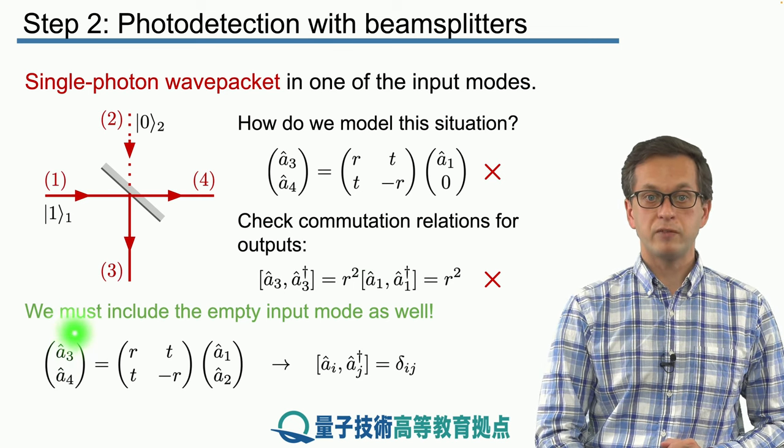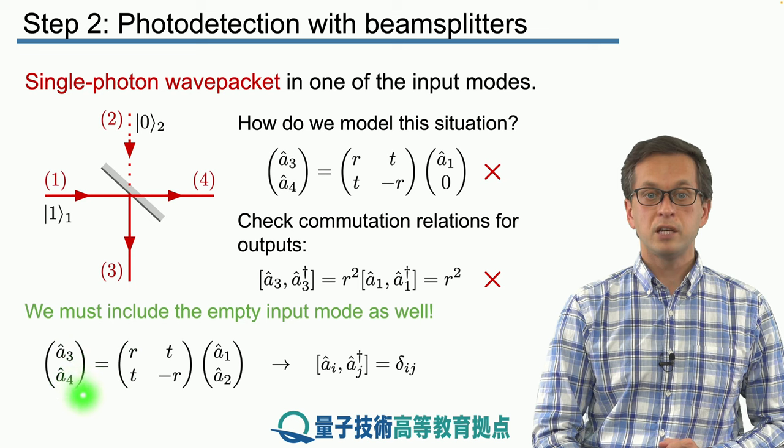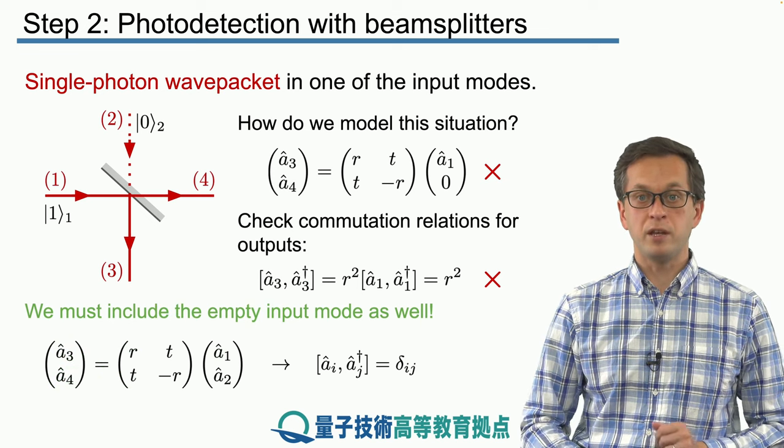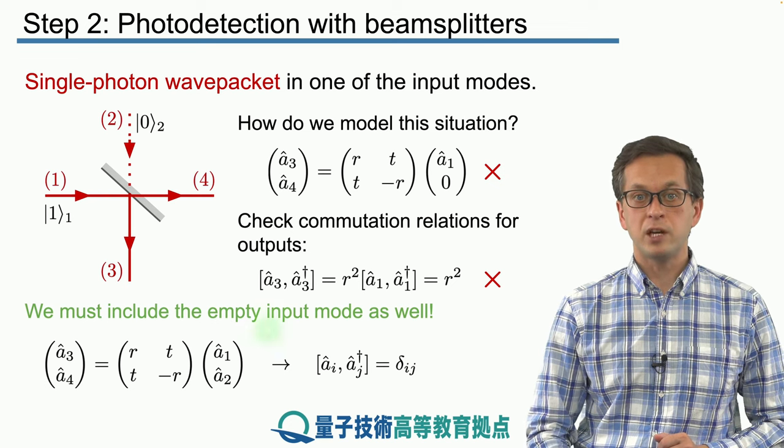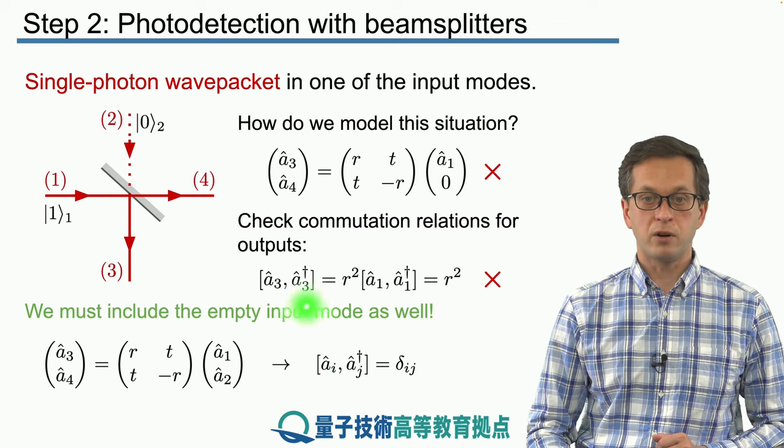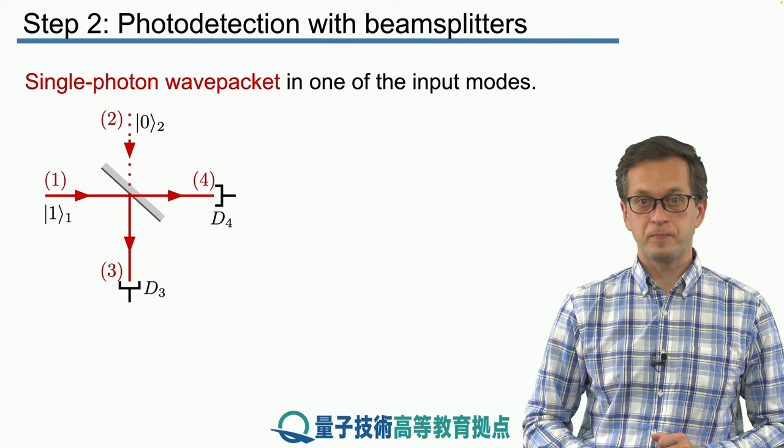So the correct form is the following. It's written over here where we have the vector of A3 and A4 times our beam splitter matrix S applied to the input modes A1 and A2. And now we can check that all the modes, whether they are input or output, satisfy the correct commutation relation.